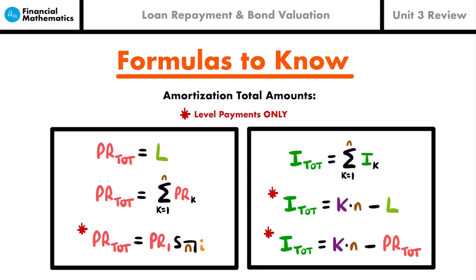If you don't have level payments, the same concept applies — just sum up all your payment amounts manually and subtract out the total principal or original loan amount to get the total interest. That's how you calculate the total amount of principal or interest for the entire loan.